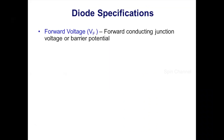The forward voltage drop is the forward conducting junction voltage, or the barrier potential. It is 0.3V for germanium and 0.7V for silicon. The actual voltage drop depends on the diode type and the current flowing through the diode.